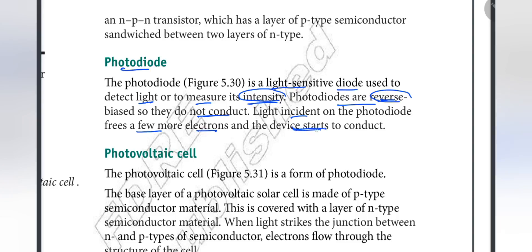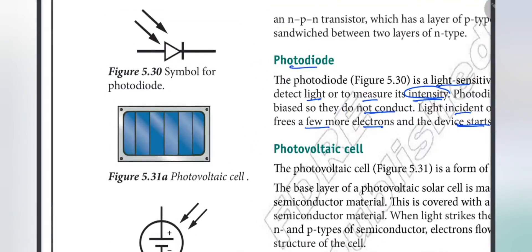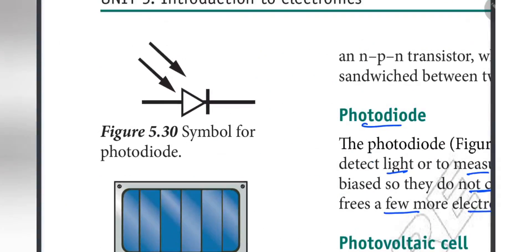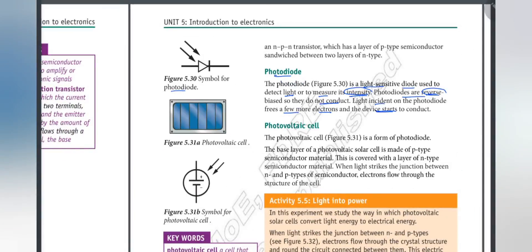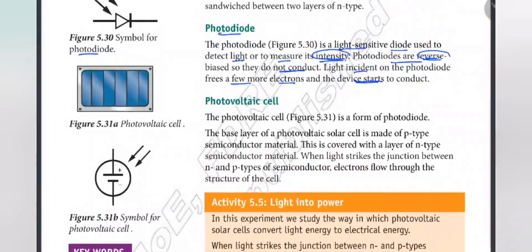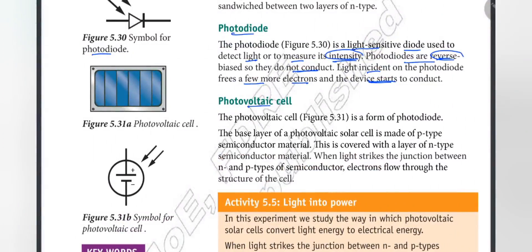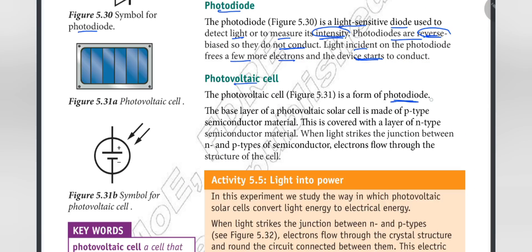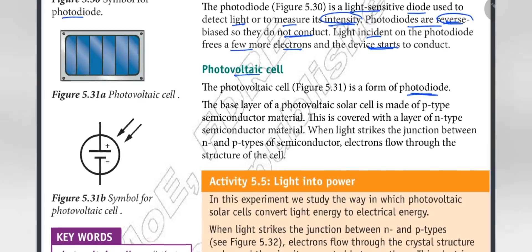The symbol for photodiode. Solar cell panels use photodiodes. Light can detect and be used in smoke and fire detection. Photodiodes are used in photovoltaic cells.